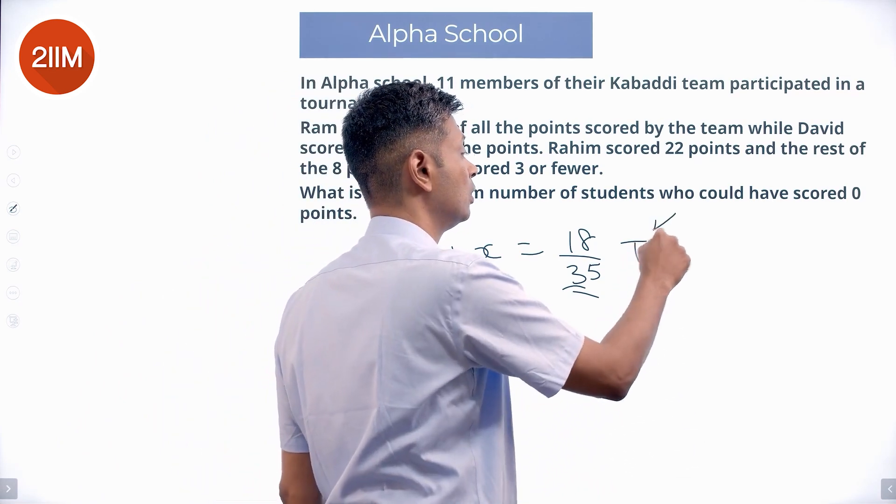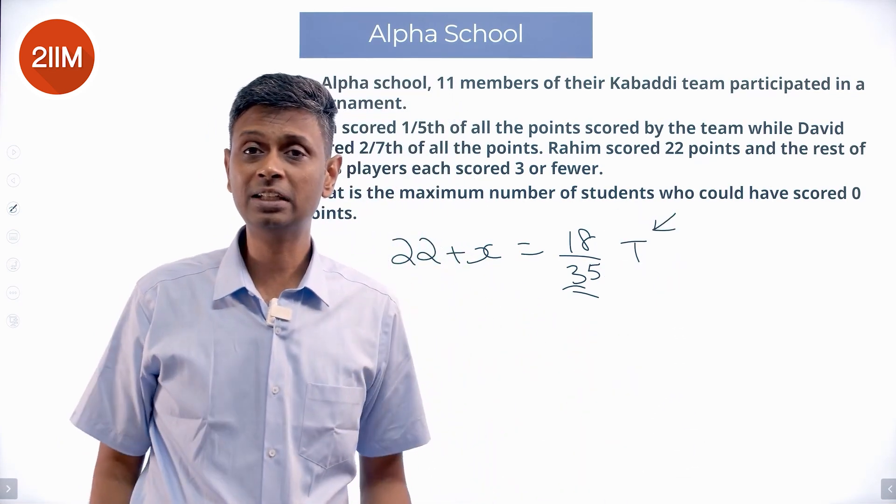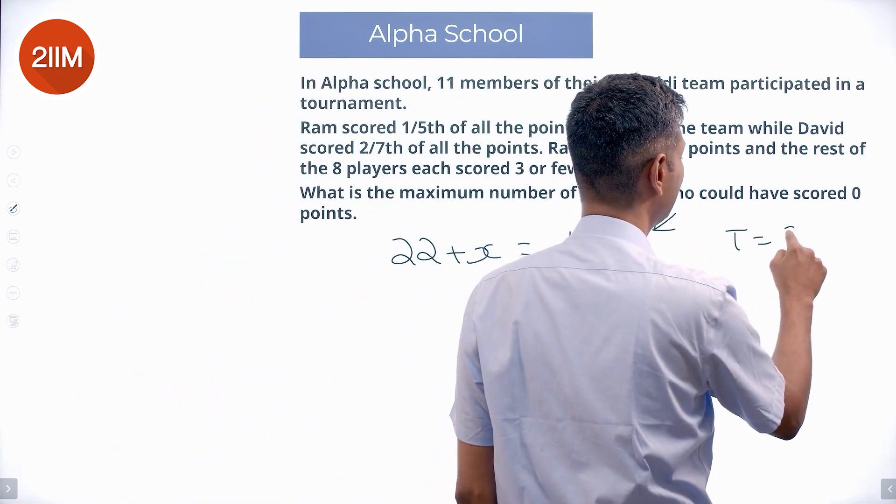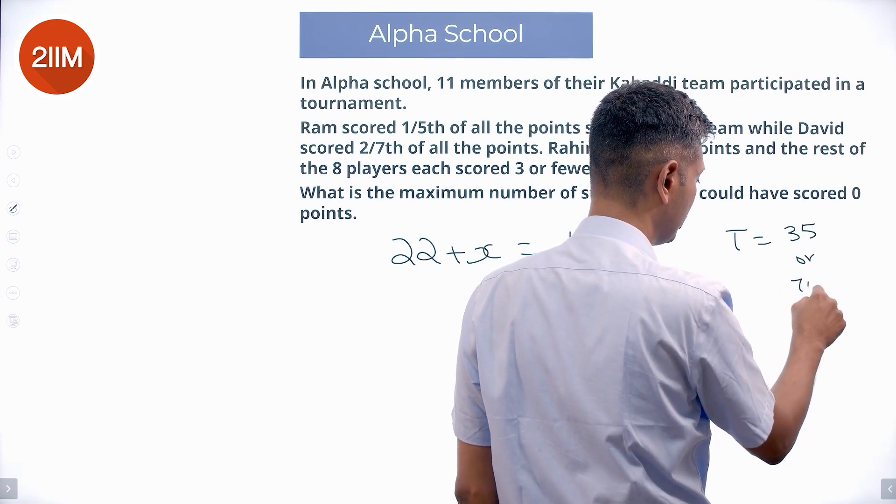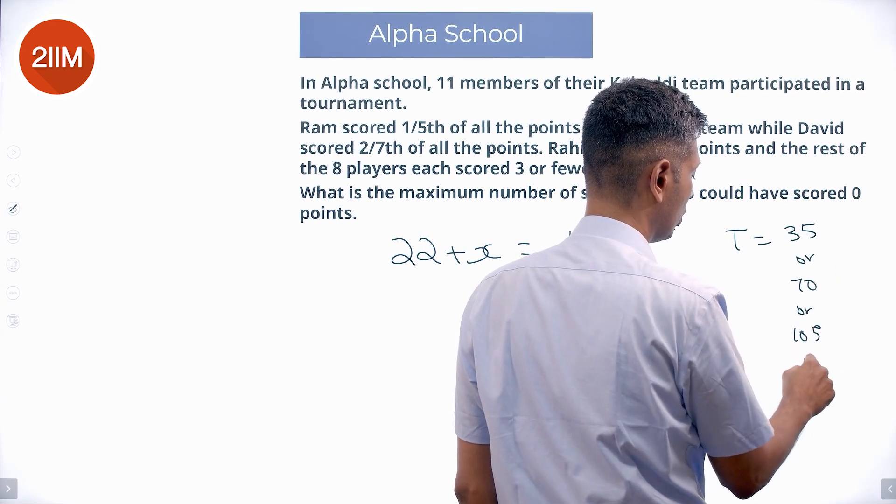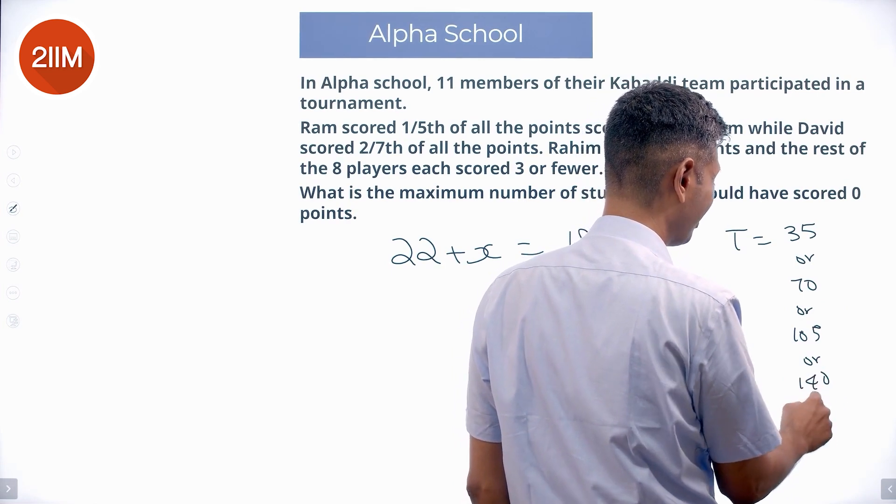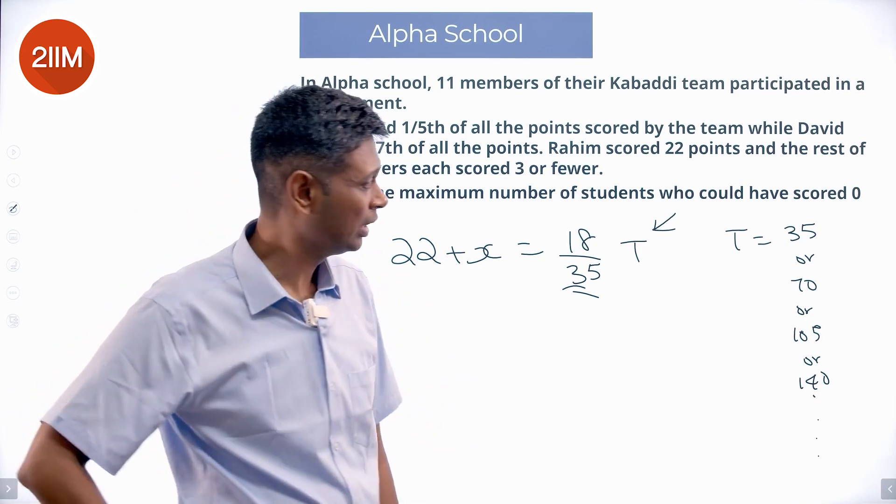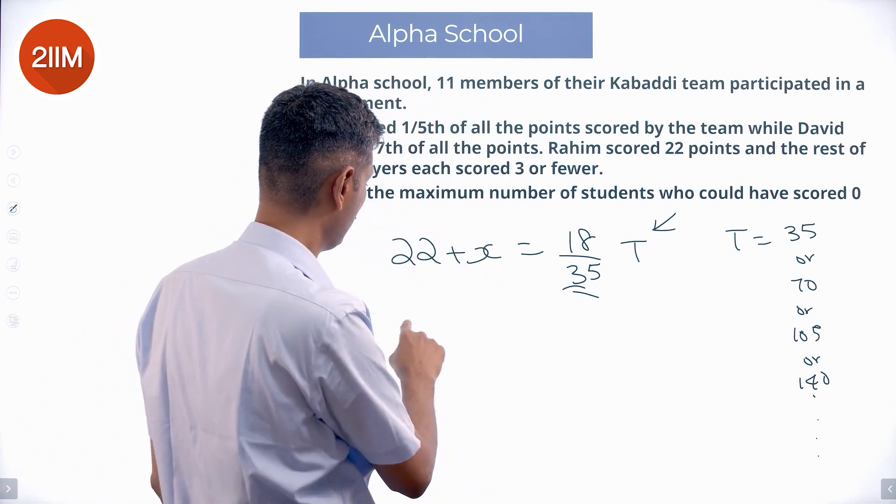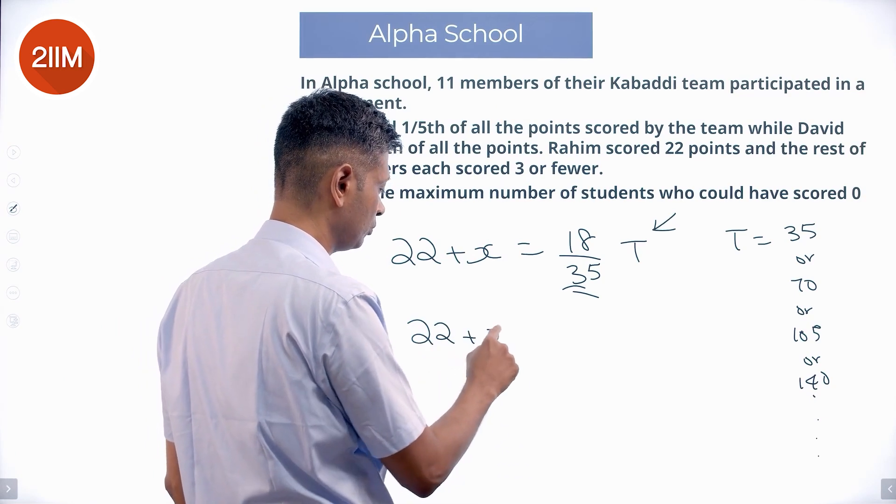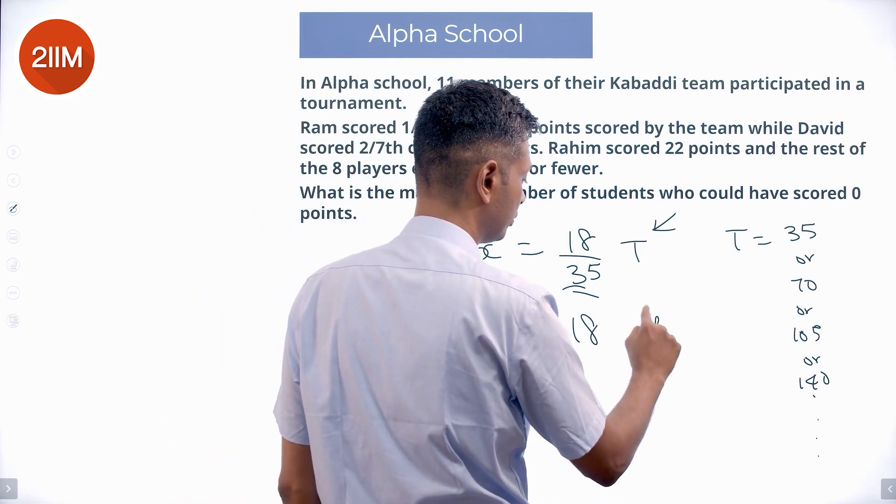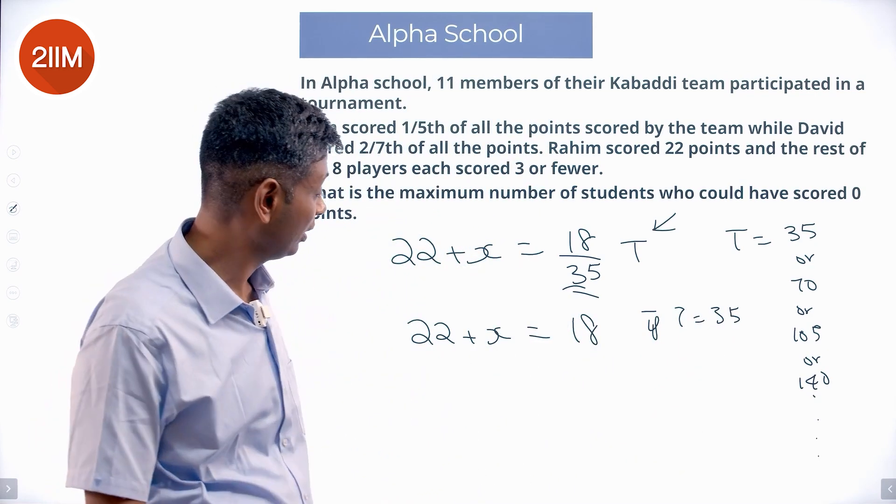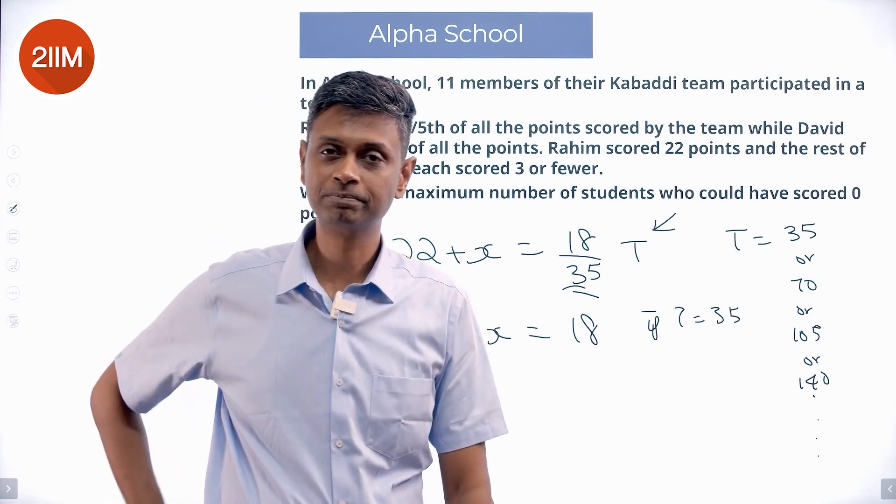My total should be a multiple of 35. Otherwise, this won't be an integer. My total should be either 35 or 70 or 105 or 140 or something like this, some multiple of 35. If I put total equal to 35, then 22 plus X will become 18. That doesn't work. Why? This X cannot be negative.